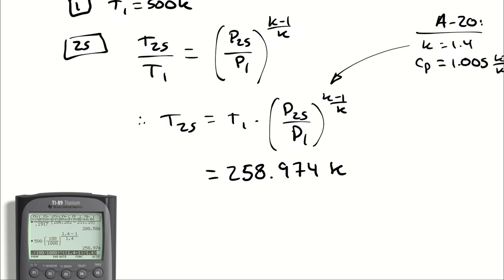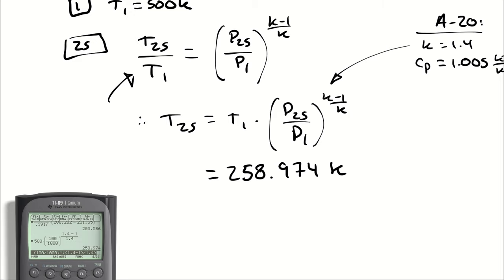Remember that because I'm using an absolute proportion here, T2S over T1, my temperatures have to be in Kelvin, therefore T1 was in Kelvin, and T2S is going to be a result in Kelvin.